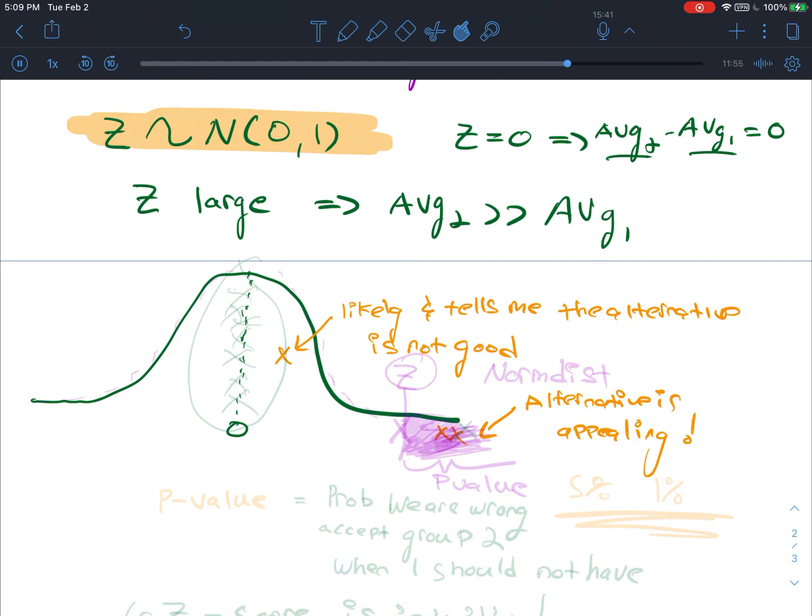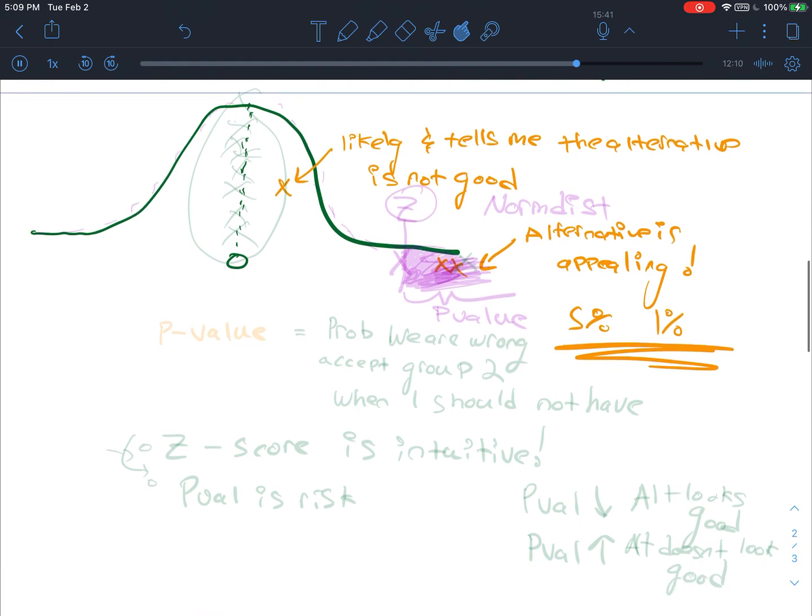And then you would tell me what confidence bounds you would need to really decide where the alternative is appealing. Some of you in class said 5%, some applications give us 1%. And so really, what these percentages mean are, what is your threshold of error? If I decide to accept the alternative, how risky are you willing to be? We're going to define this risk through a p-value. The p-value is actually quite easy to understand. This is sort of like the probability that we're wrong in the sense that I accepted group 2 when I should not have.